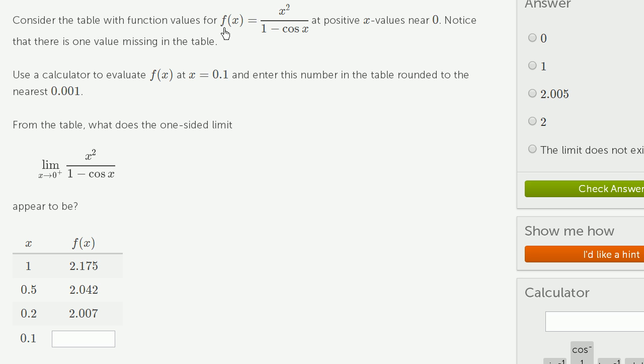Consider the table with function values for f(x) equals x squared over 1 minus cosine x at positive x values near 0. Notice that there is one missing value in the table.